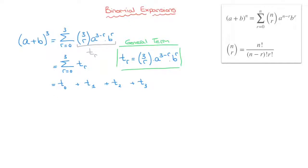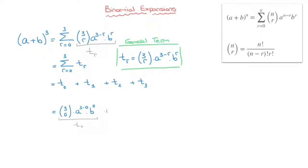All we have to do now is find an expression for each of these four terms using the general term, replacing every r by the r value for each term. For t0, r equals 0, giving binomial coefficient 3,0 times a raised to the power of 3 minus 0 times b raised to the power of 0. For t1, r equals 1, giving binomial coefficient 3,1 times a raised to the power of 3 minus 1 times b raised to the power of 1.